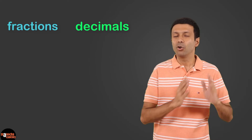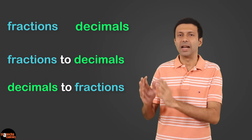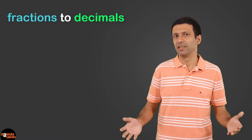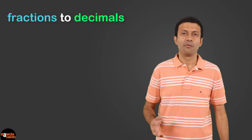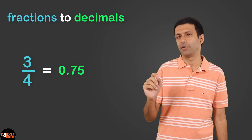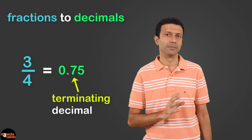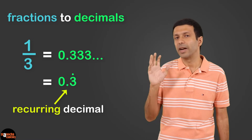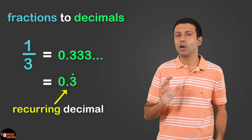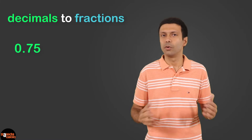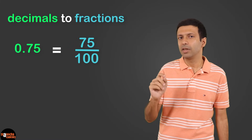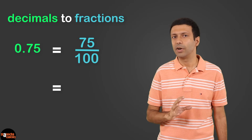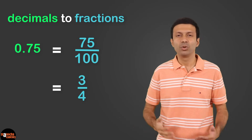Let's talk about fractions and decimals — how to convert fractions to decimals and decimals to fractions. Converting fractions to decimals is easy: you just divide. For example, 3 by 4 is 0.75, a terminating decimal, and 1 by 3 is 0.333 recurring, a recurring decimal. To convert 0.75 back to a fraction, we write it as 75 by 100, and simplifying gives 3 by 4. These are simple cases.